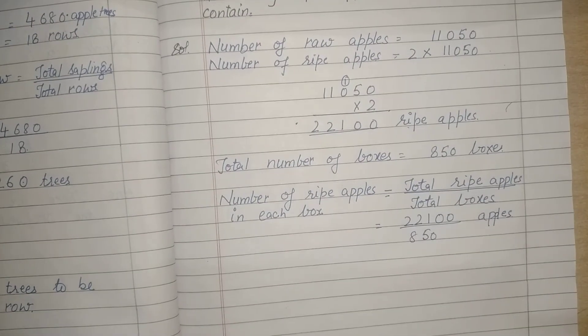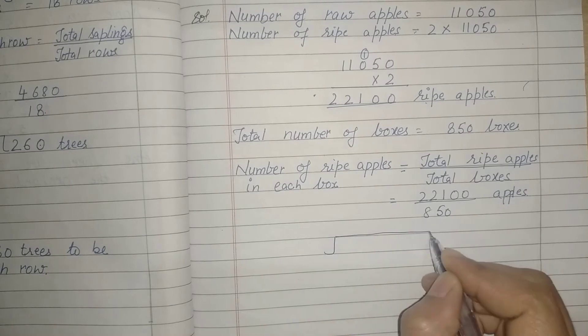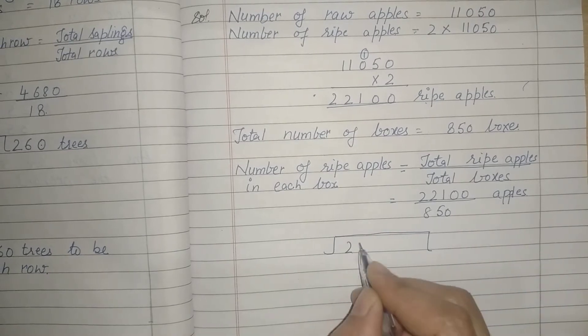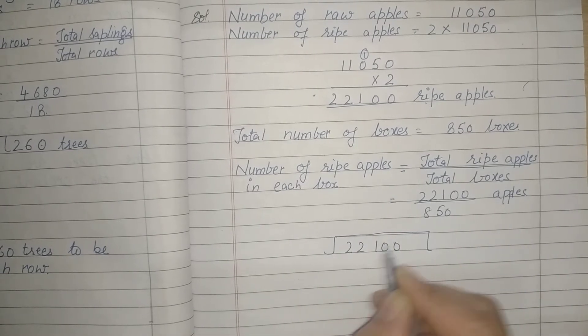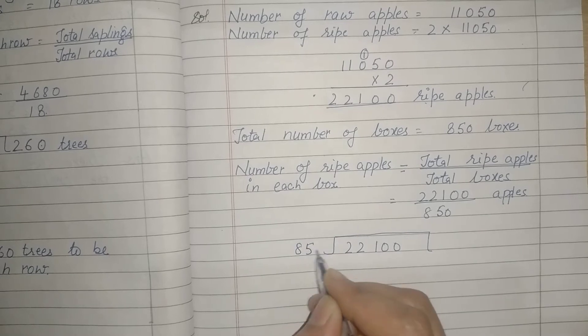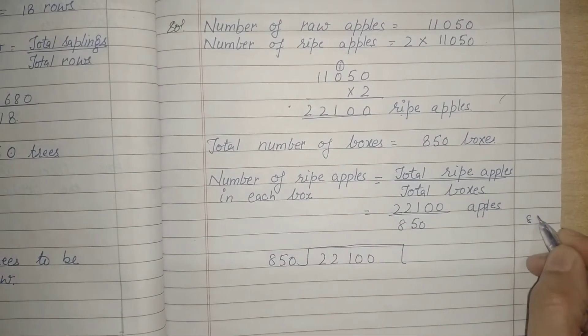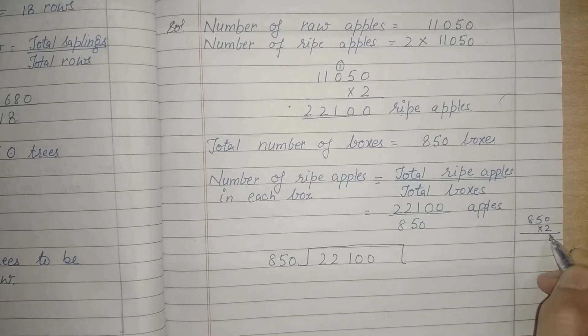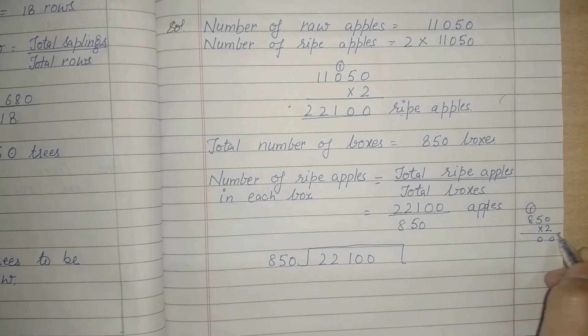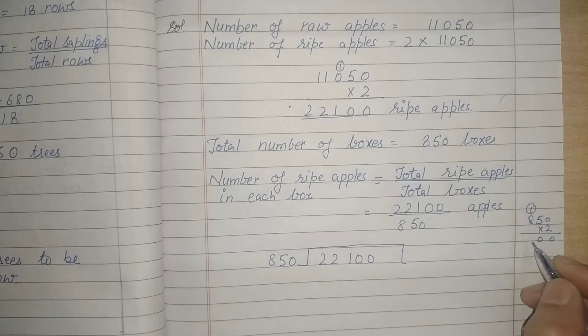Now let us divide this. This is 22,100 divided by 850. We will check this and multiply it by 2. 2 times 0 is 0, 2 times 5 is 10, 1 carry over, 2 times 8 is 16 plus 1, 17.